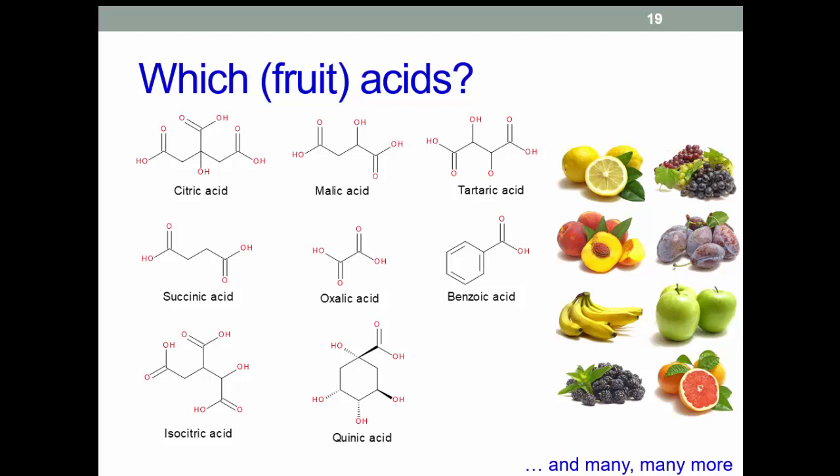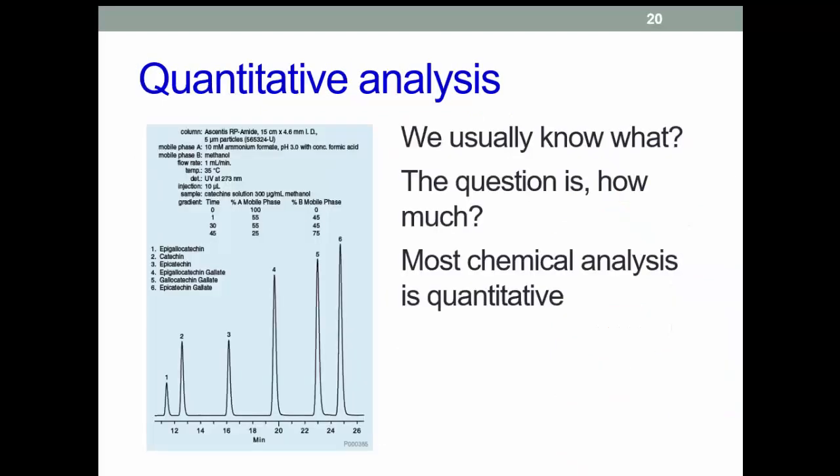Yeah, so quantitative analysis: we usually know what, as I've said. The question is how much. And this, for example, is looking at various examples of the taste components in tea. So these catechins are the things that give tea its taste, and this is an example done by HPLC looking at the various components of a particular tea. Okay, that's all for this one. Hope that was useful. Be back in a moment for Part C, Part 3.